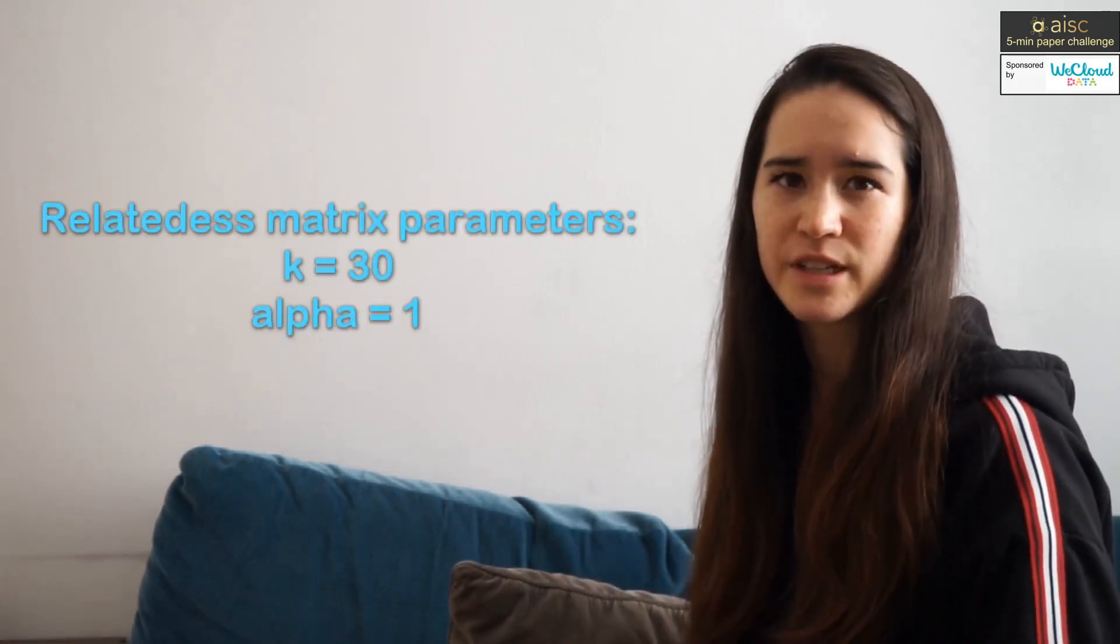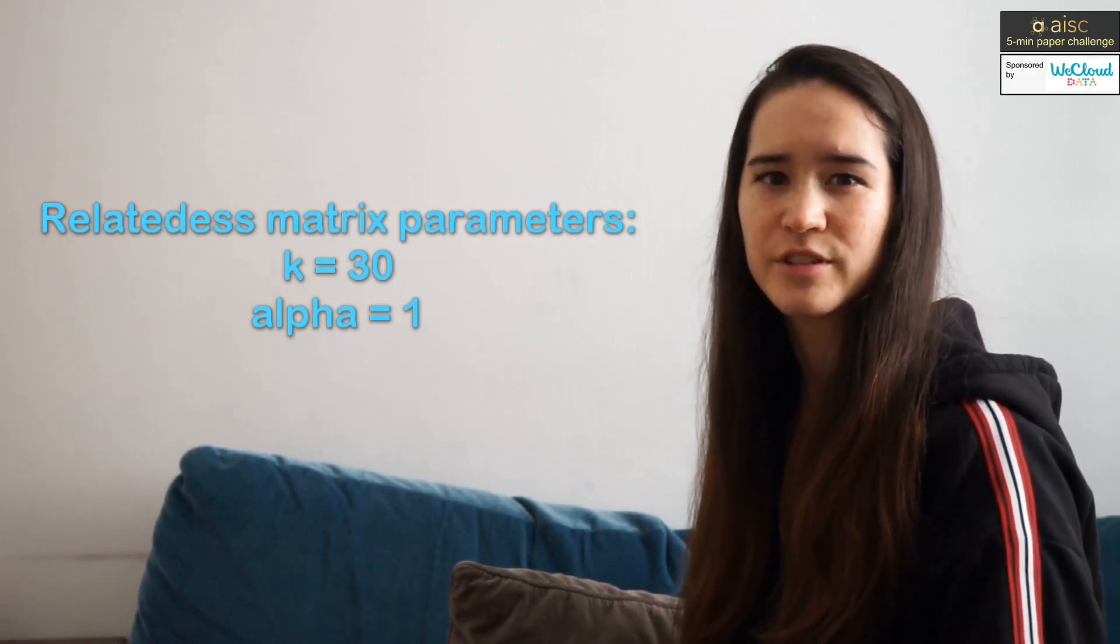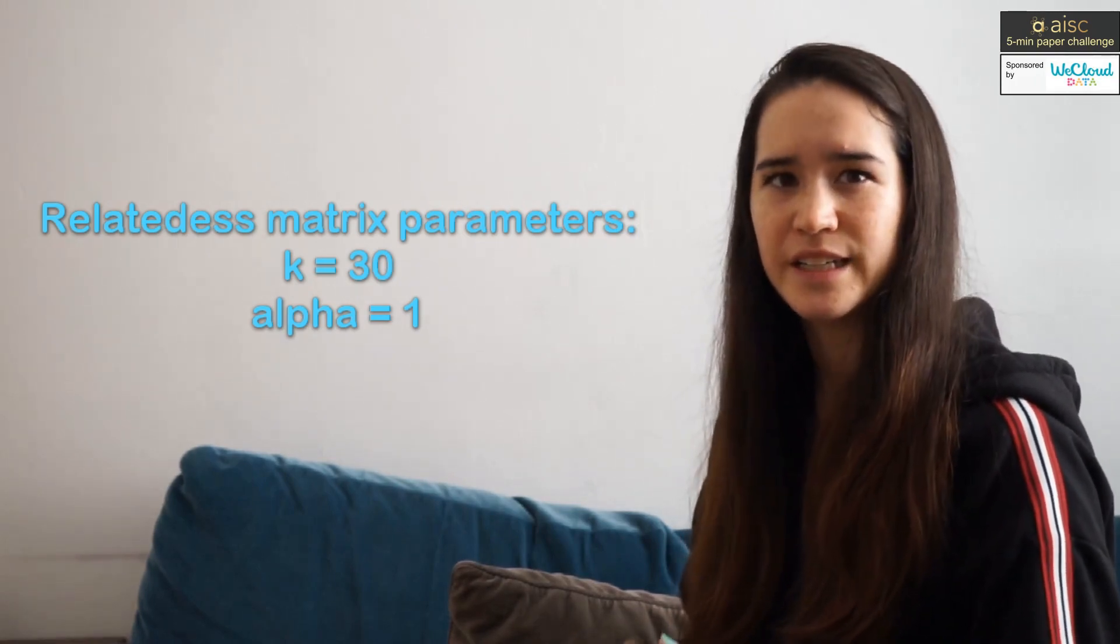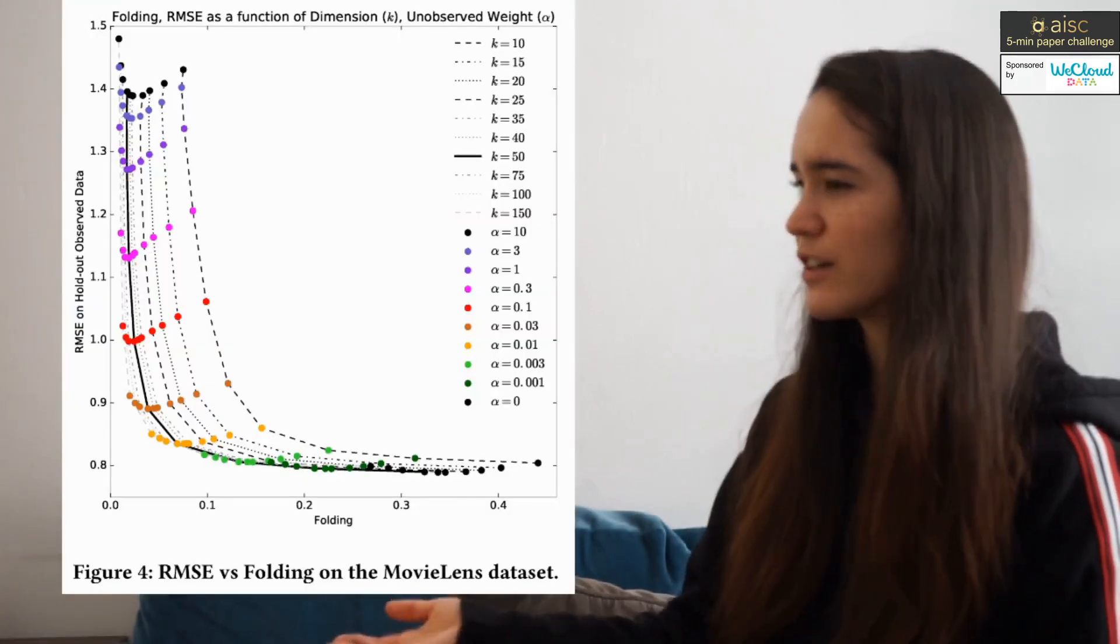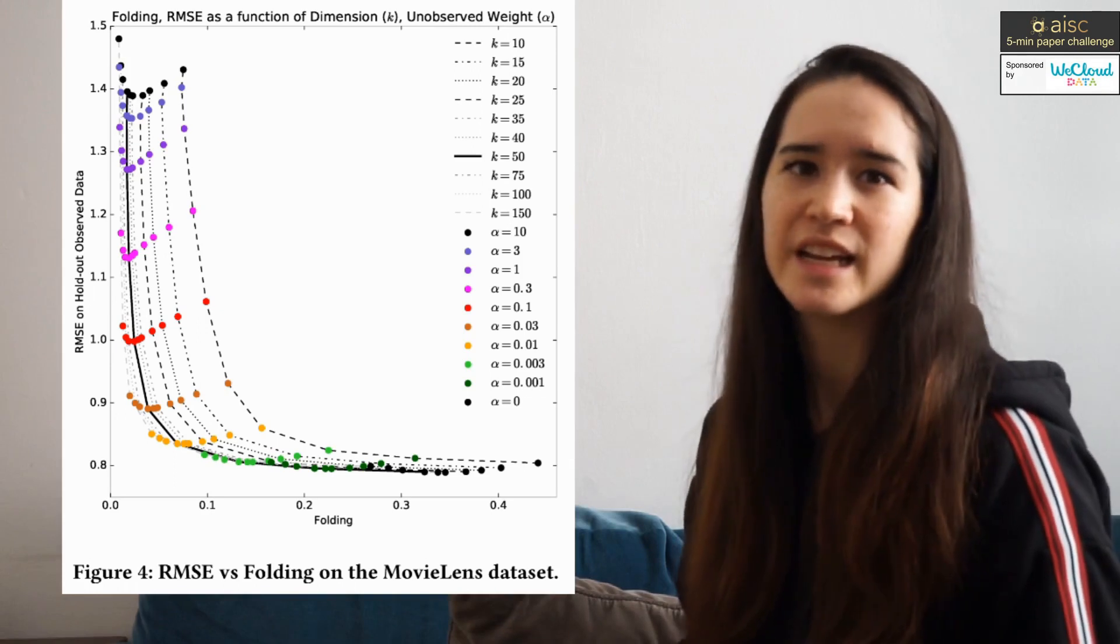So the authors experiment on the MovieLens 10 million dataset, which has 10 million ratings for about 10,000 movies and 71,000 users. For the relatedness matrix, the authors chose a latent space dimension k of 30 and an alpha of 1. And they train their models varying k and alpha, and they plot root mean squared error and folding as a function of k and alpha.